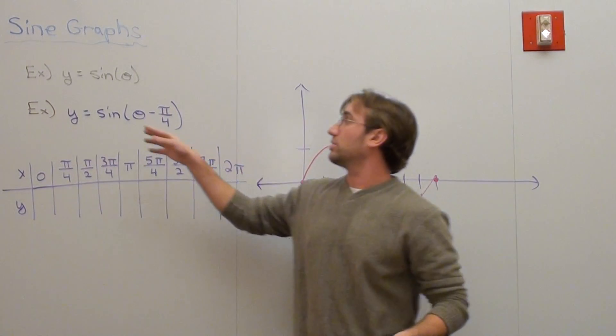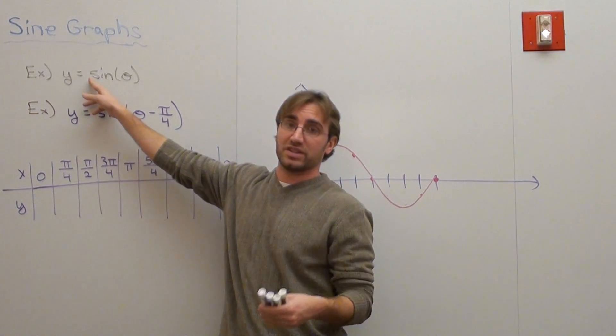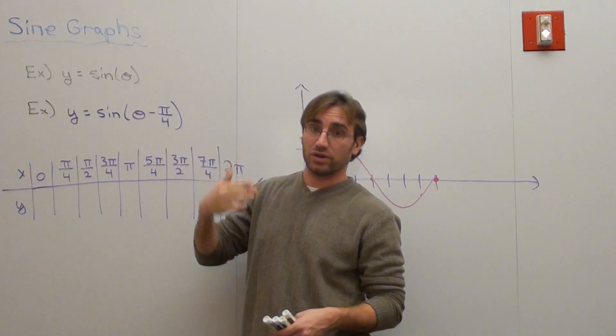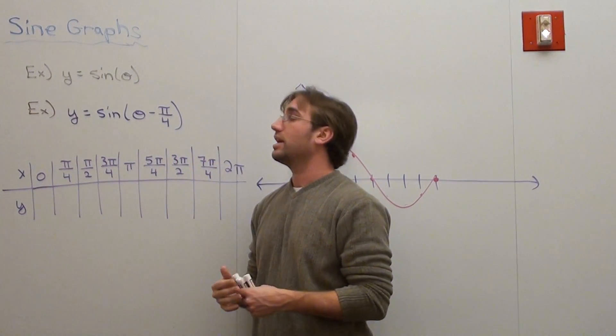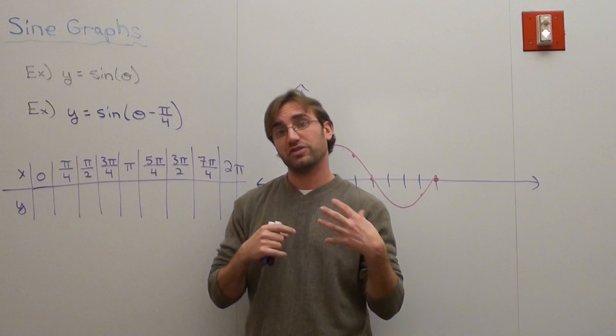Hello again. We had worked with amplitude, which means we put a number in front of the sine to be multiplied. We worked with a vertical shift, which means we added or subtracted something after the sine function. Now we're going to work with something called phase shift.